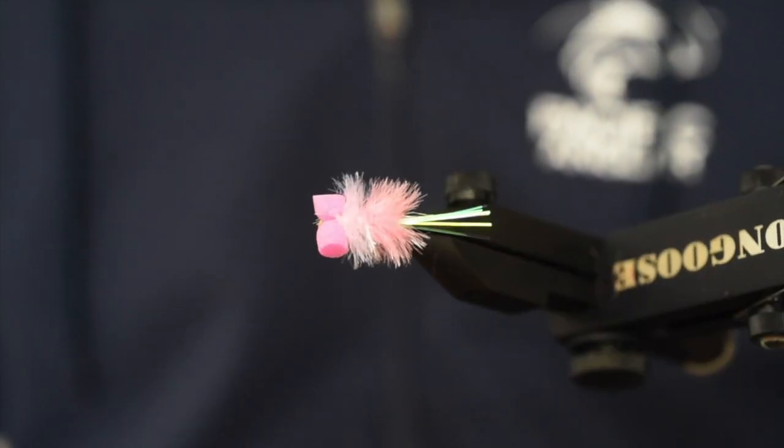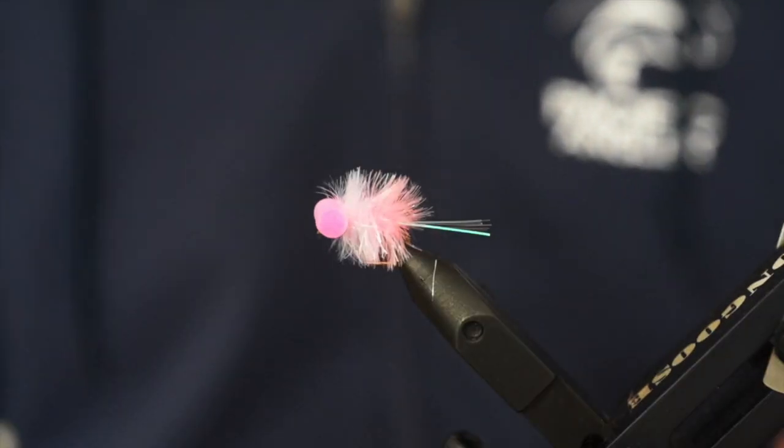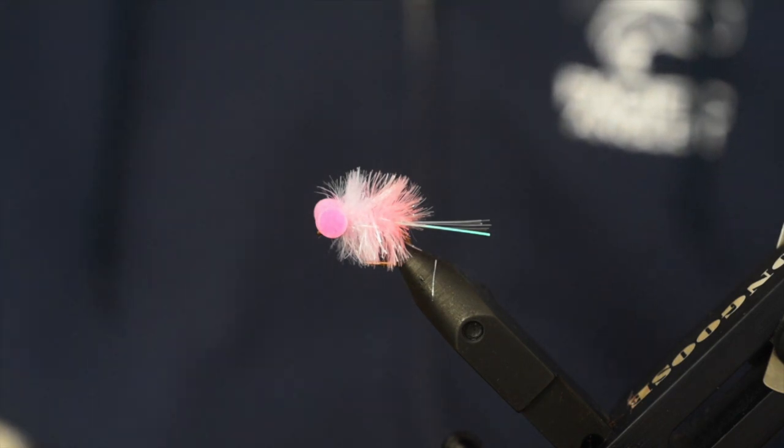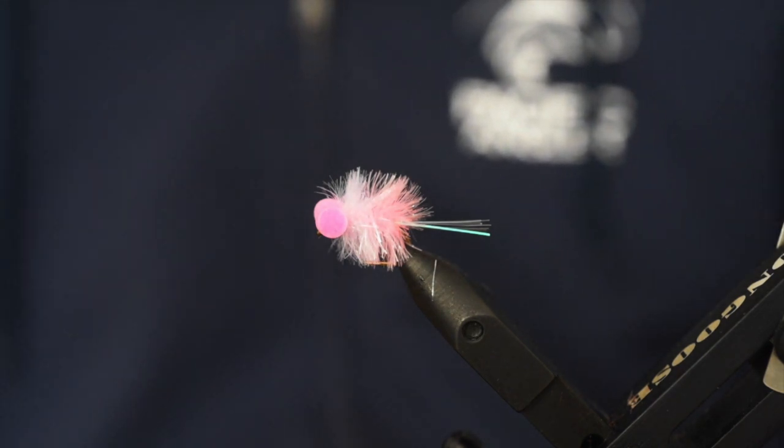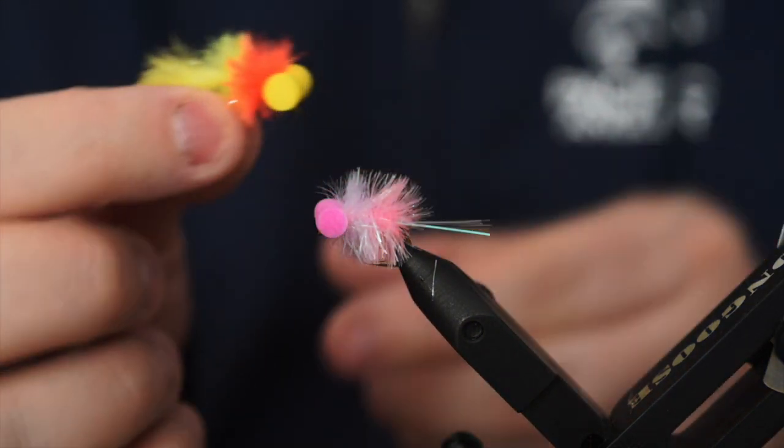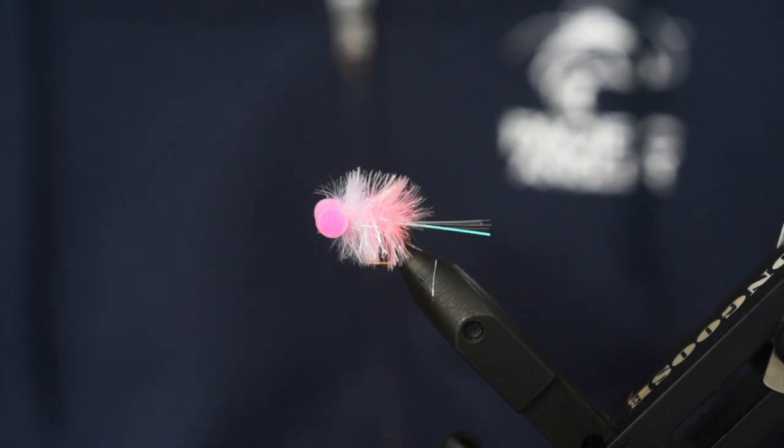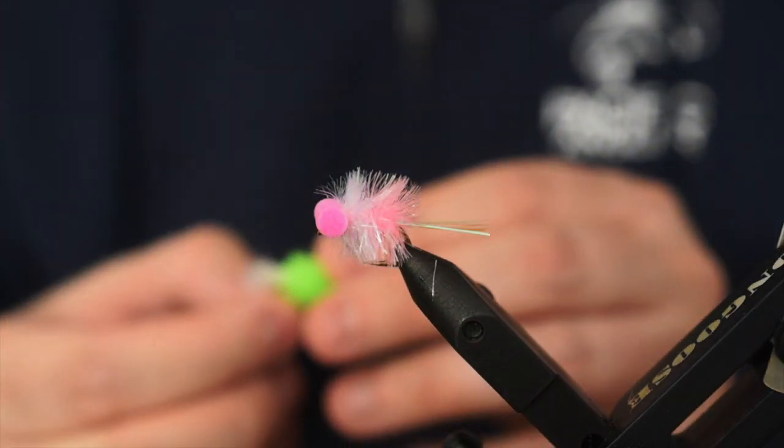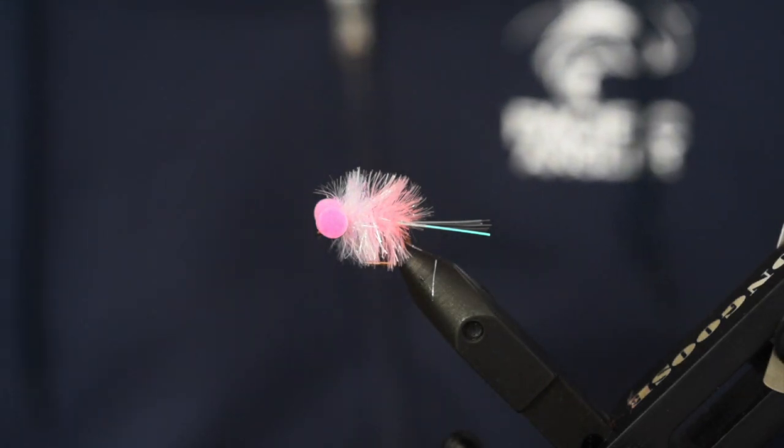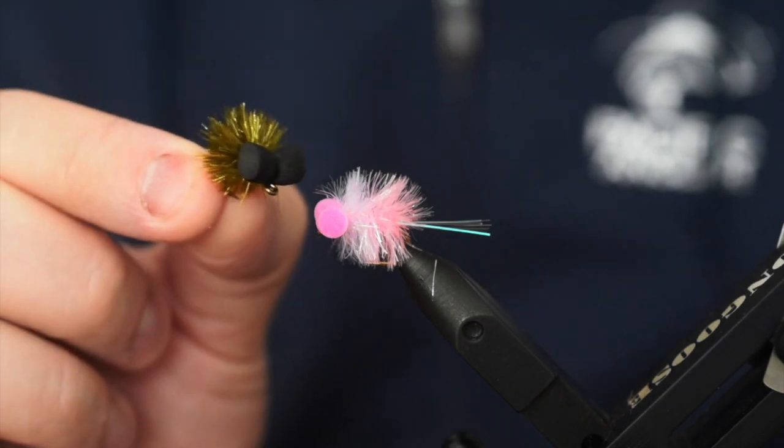This is a booby fly. If you've been living under a rock, you've probably never heard of these things. They are a pure attractor pattern. You can tie them in a bazillion different colors. One of the more popular ones is the tequila booby, which is that guy there, that yellow and orange. Another famous one is the margarita, green and white.